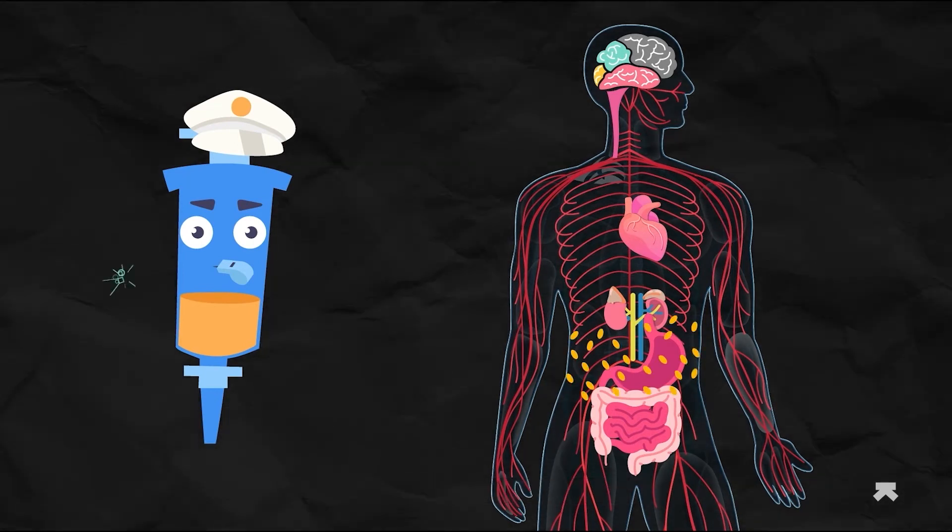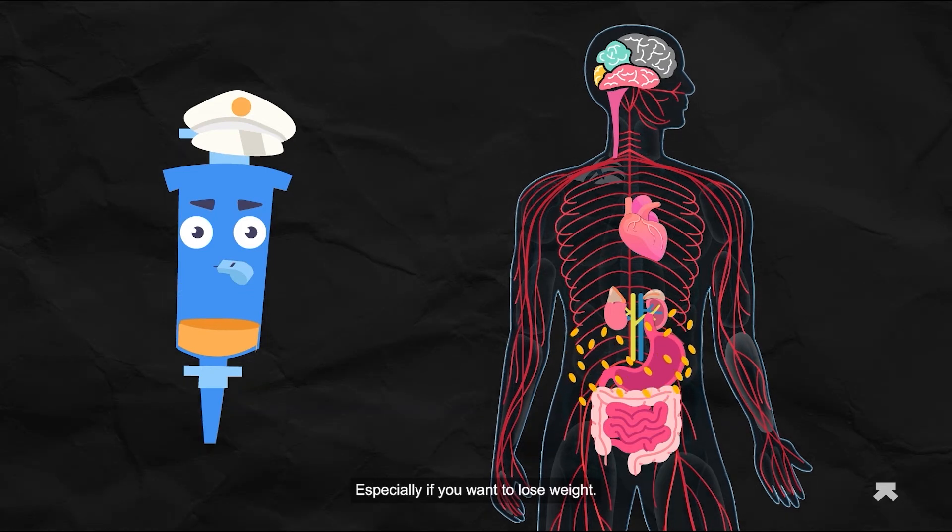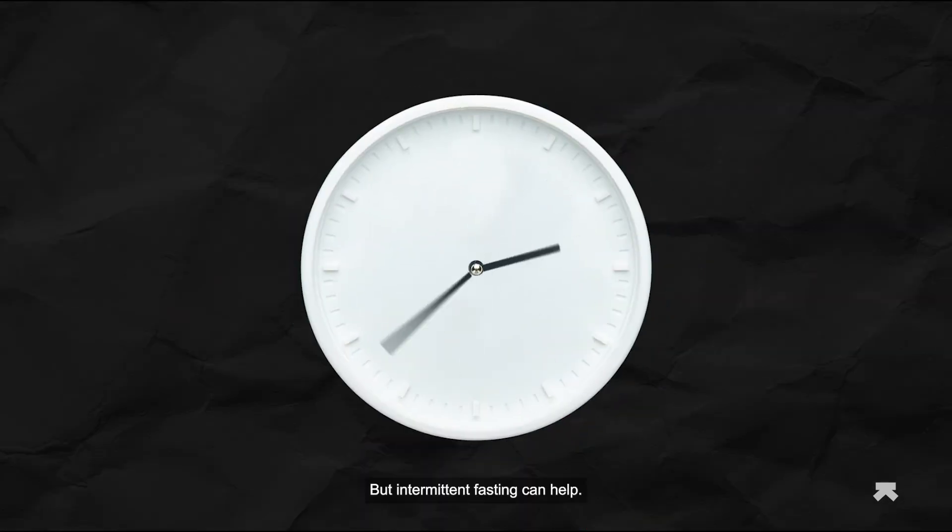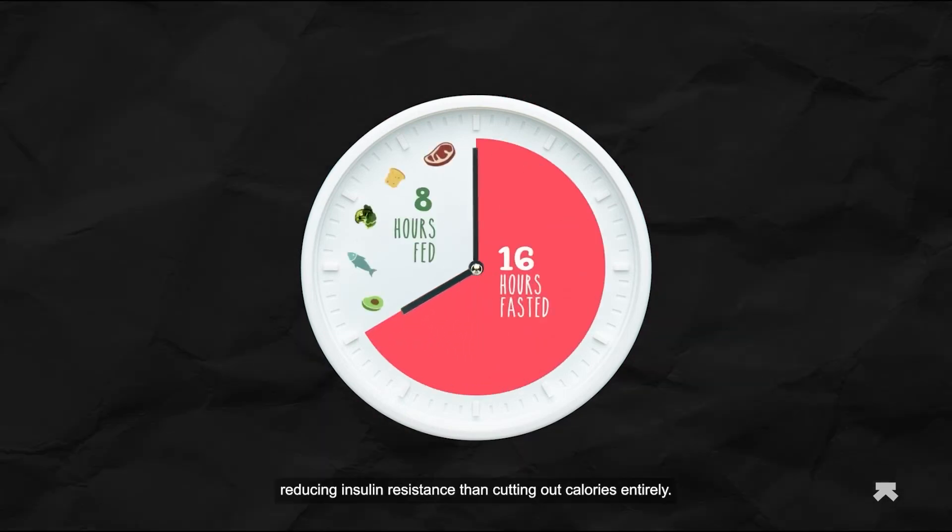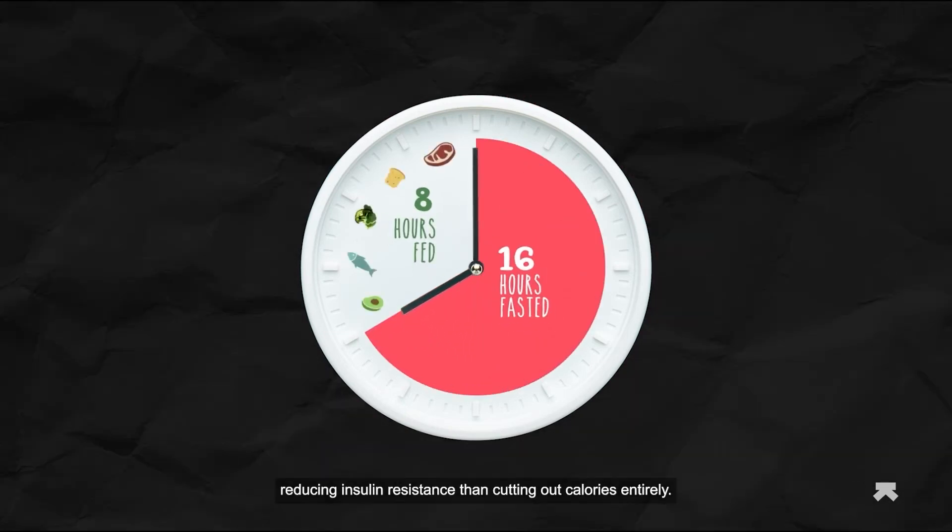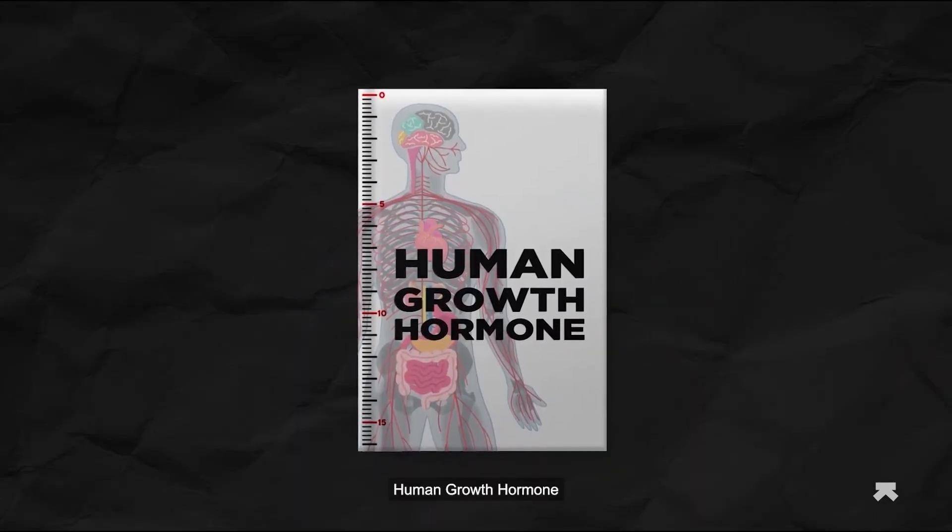from breaking down. Too much insulin is a problem, especially if you want to lose weight. But intermittent fasting can help. Fasting is known to be more effective at reducing insulin resistance than cutting out calories entirely.